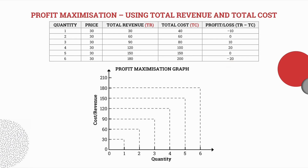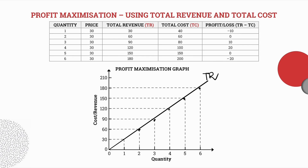Now let's fill in our graph, starting with the total revenue curve. Our total revenue curve has a directly proportional shape, and the reason it is directly proportional is because the price stays the same irrespective of the quantity demanded. So as quantity demanded increases, the price stays the same, producing a straight upward-sloping line.